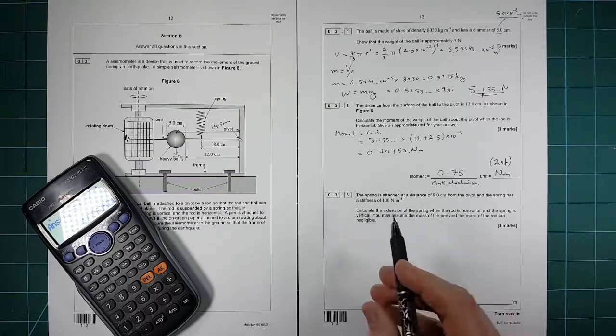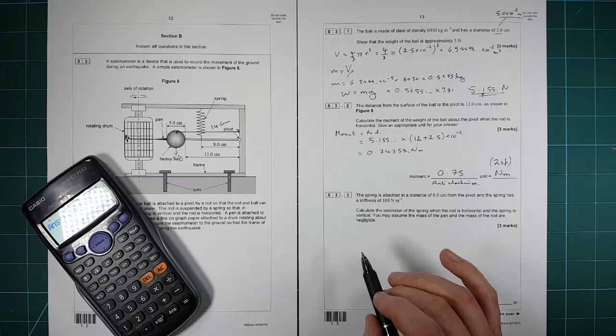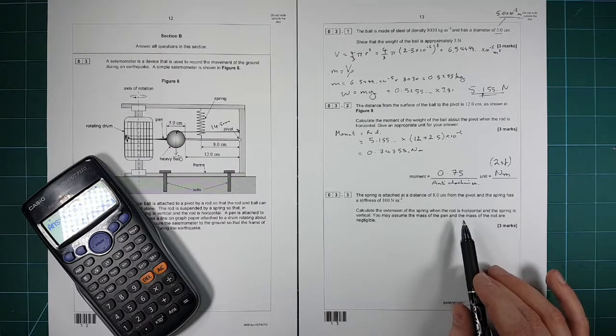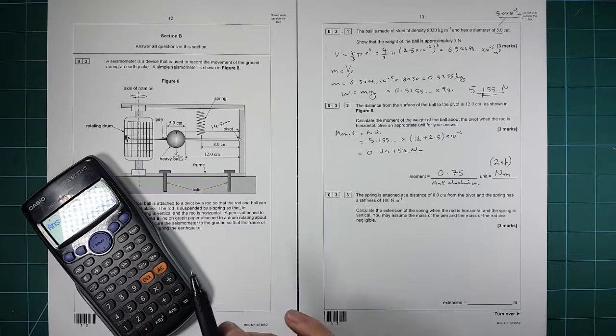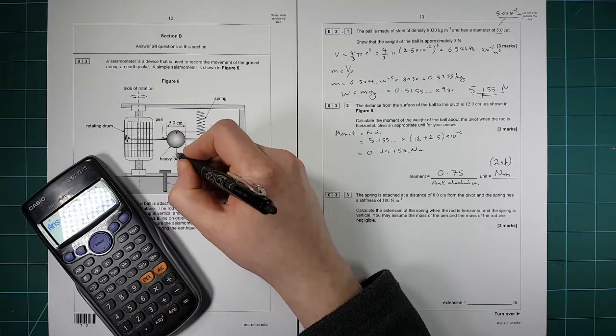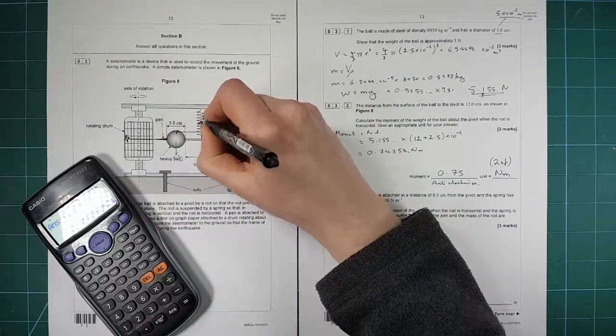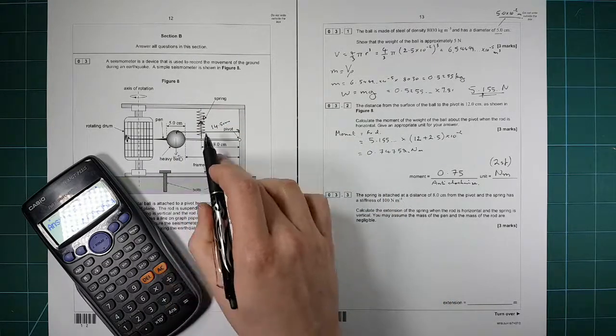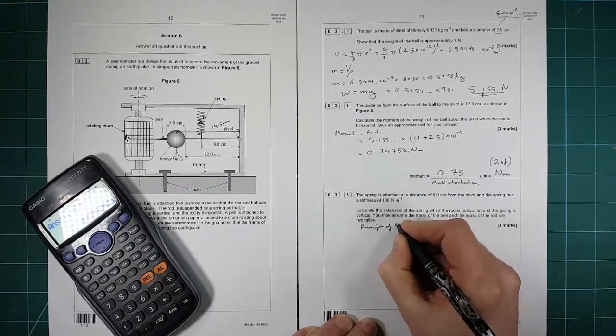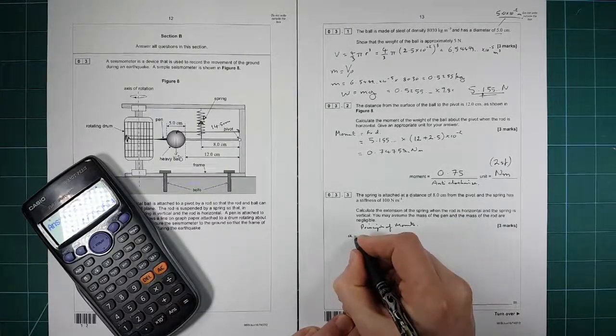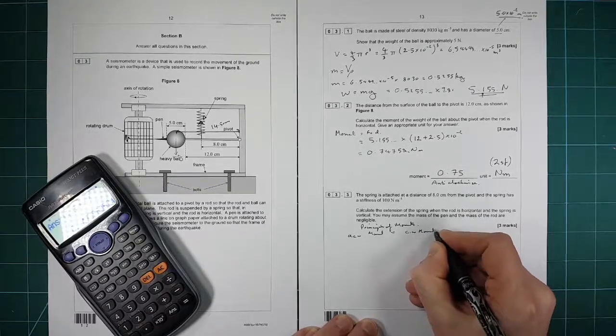So the spring is attached to the distance of 8 centimeters from the pivot and it has a stiffness of 100 newton meters. Calculate the extension of the spring when the rod is horizontal. So you may assume that everything else doesn't have any impact. There's going to be that one trying to twist it down that way, and there's going to be a force up there, so that's going to be the force in the spring pulling it upwards. The moments must balance, so the principle of moments states that the anti-clockwise moment must equal the clockwise moment for equilibrium.